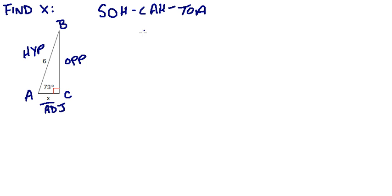So our trig ratio that uses adjacent and hypotenuse would be cosine. So the cosine of angle A is equal to the adjacent over our hypotenuse. So fill in the information we know.